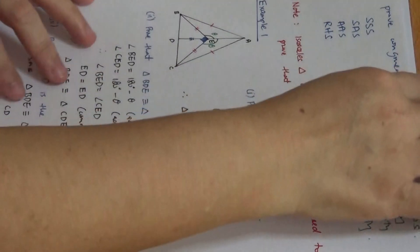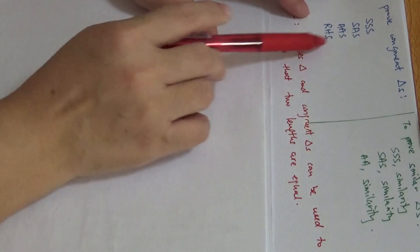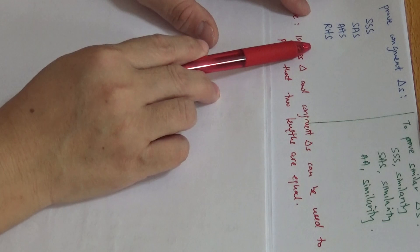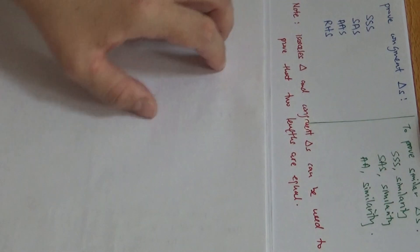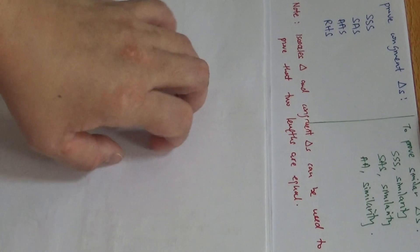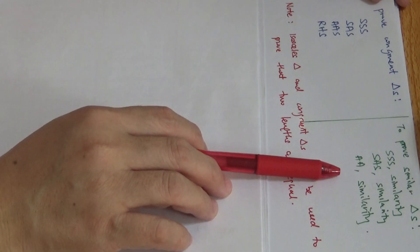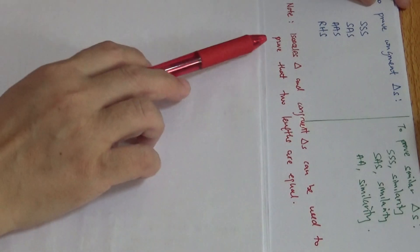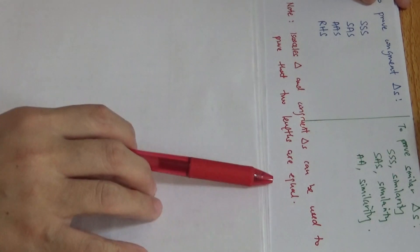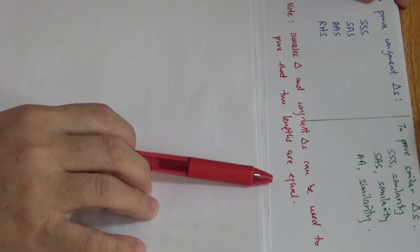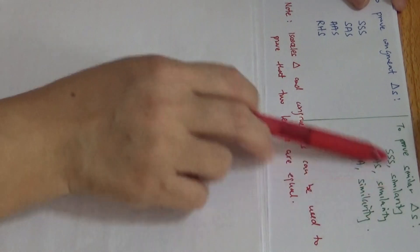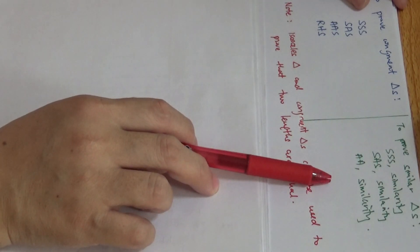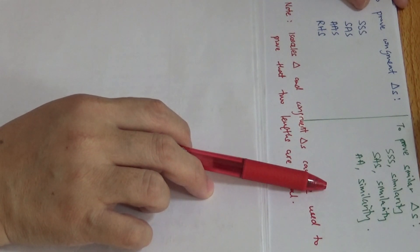Now we are moving on to revise some things from Maths. To prove congruent triangles, we have four properties: SSS, SAS, AAS, and RHS. And to prove similar triangles, we have three properties: SSS similarity, SAS similarity, and AA similarity. Note that isosceles triangles and congruent triangles can be used to prove that two lengths are equal. For similar triangles, when the question involves ratios, we will use the property of similar triangles.